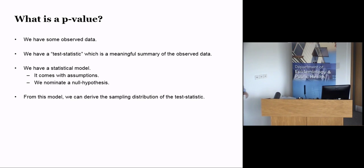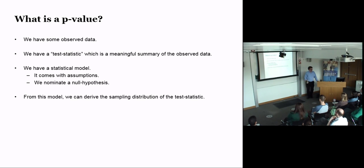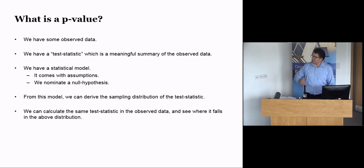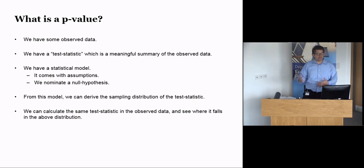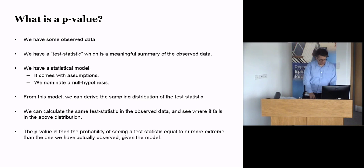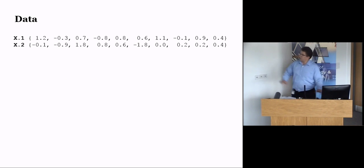From the model and the test statistic, we can estimate a sampling distribution of that test statistic. The people who really did this were Gosset and Fisher at the turn of the 20th century. Fisher's mathematical genius was the ability to figure out these sampling distributions from the assumptions in front of him, and that changed the face of statistics. Having that sampling distribution is the real key part.